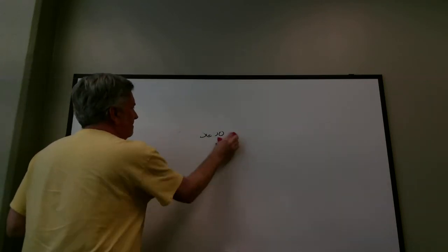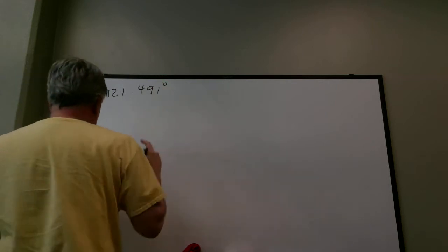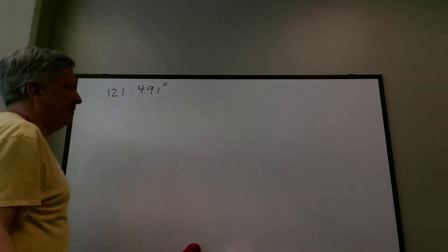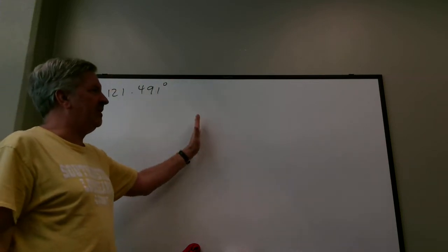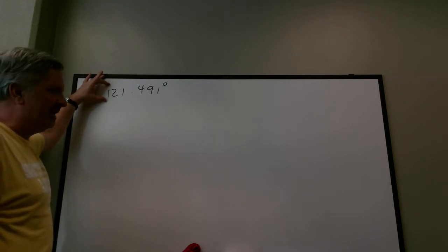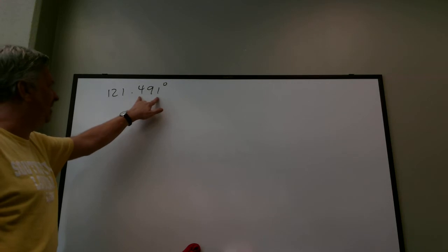The next problem is converting the other way. Convert 121.491 degrees to degrees, minutes, and seconds — it's just the problem in reverse. We want some degrees, some minutes, some seconds. Clearly we have 121 degrees, and then a fractional part of a degree that will become our minutes and seconds.